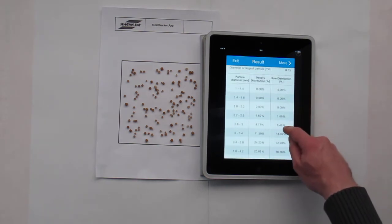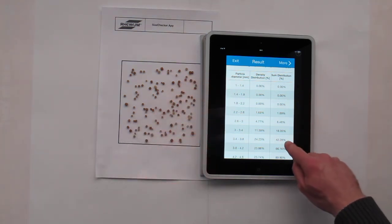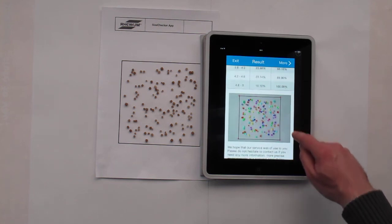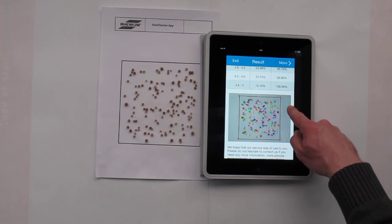You will find here the particle size distribution, the particle diameter, and the sum distribution in percentage. If you scroll down, you will also find a picture where you can see how the software has analyzed the particles.